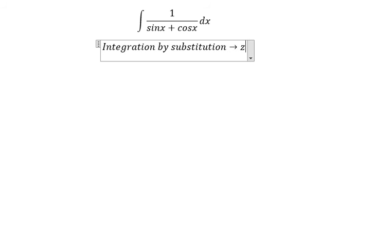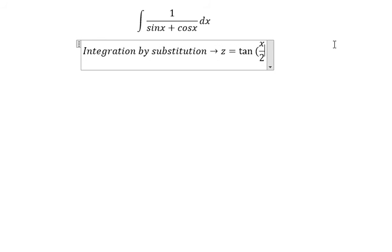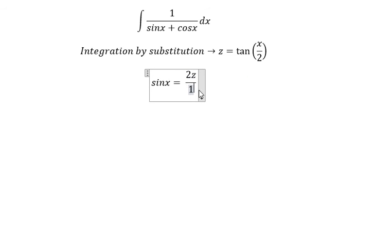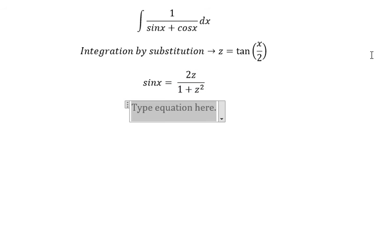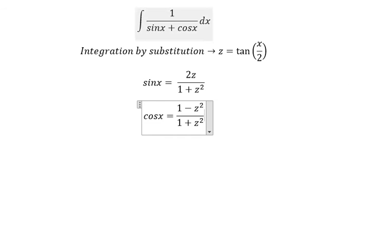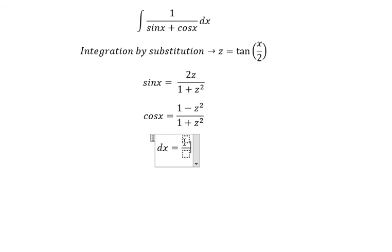We put z equal to tan(x/2). So we put sine x equal to 2z over 1 plus z squared. For cosine x, we need to change it into 1 minus z squared over 1 plus z squared. And we have dx equal to 2dz over 1 plus z squared.